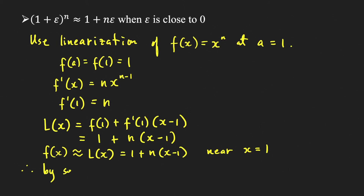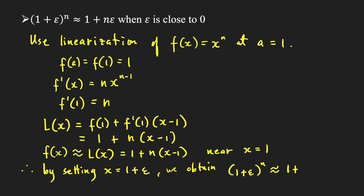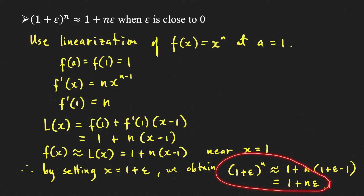By setting x equal to 1 plus epsilon, which is close to 1 when epsilon is close to 0, we get (1 + ε)^n = f(1 + ε) ≈ 1 + n times (1 + ε − 1), which simplifies to 1 + n times epsilon. Therefore, we can use this approximation (1 + ε)^n ≈ 1 + nε when epsilon is close to 0.